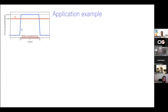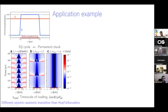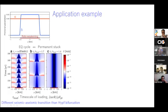Let me show an application example. I assumed a 2D simulation with a distribution of A and B parameters and a velocity-weakening region in the central patch. Running earthquake sequence simulations, the left case is purely elastic where relaxation time is infinite. As viscoelastic relaxation becomes more significant with decreasing relaxation time, the recurrence interval of earthquakes increases and we finally get a permanently stuck patch — a seismic-to-aseismic transition, but different from a Hopf bifurcation.